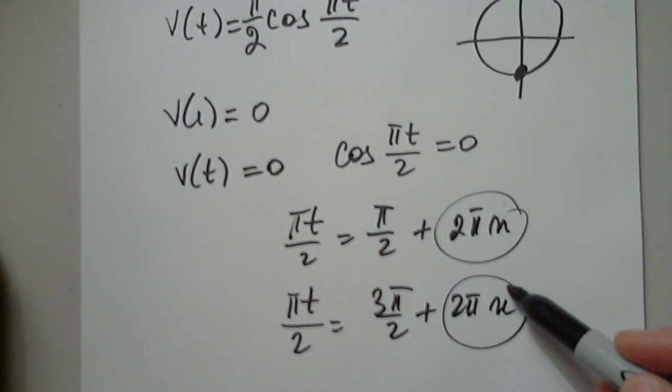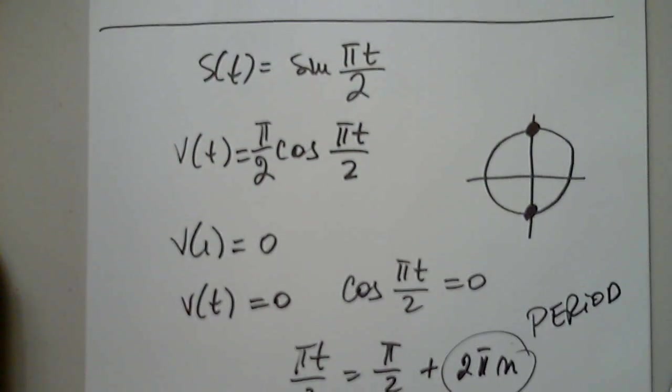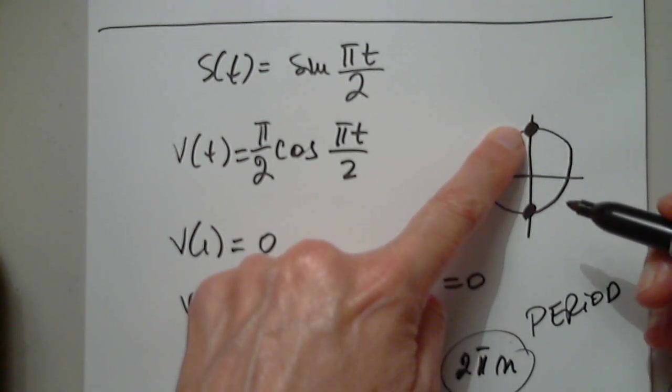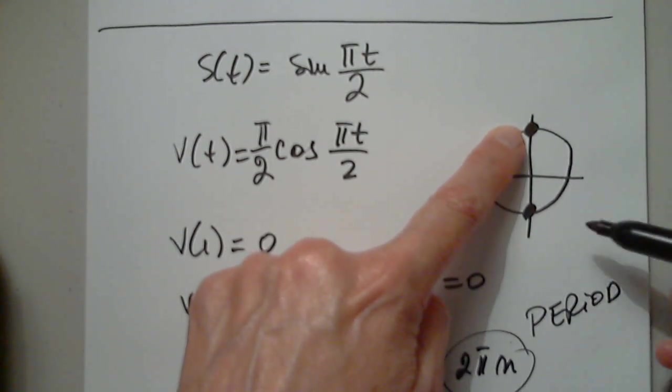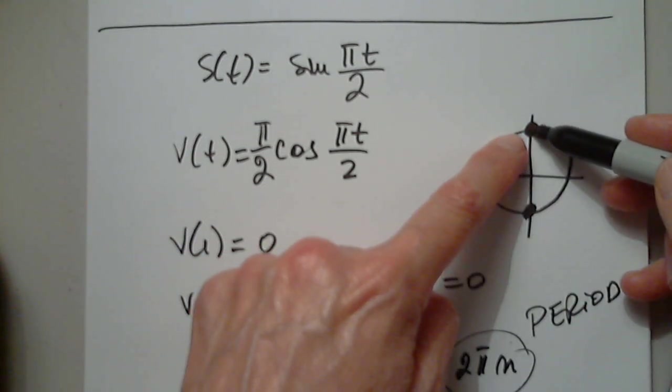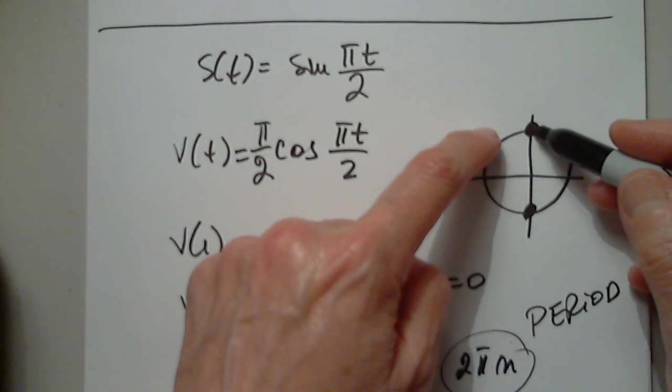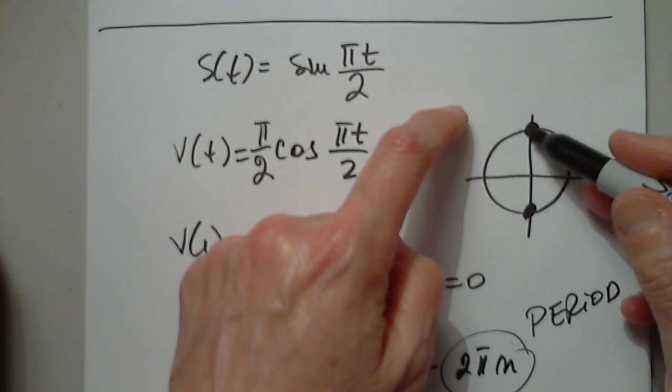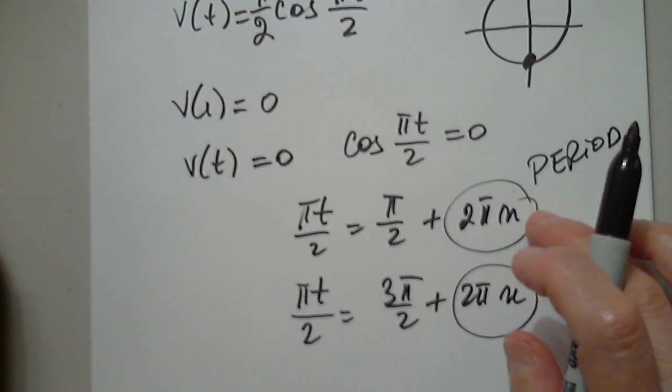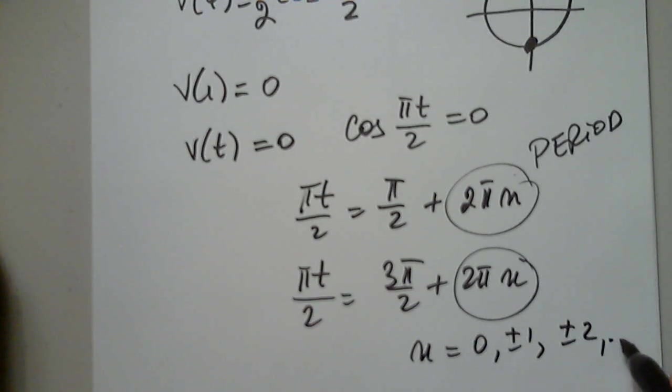So what does the 2 pi n mean? It's the period of cosine. In other words, to land here we have pi over 2 when n is zero. But we also have pi over 2 plus 1 complete rotation, and then pi over 2 plus 2 complete rotations, or pi over 2 minus 1 rotation, or pi over 2 minus 2 rotations. That's why this n can be anything from 0, plus or minus 1, plus or minus 2, and so on.